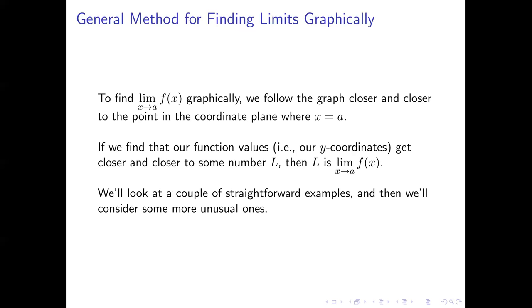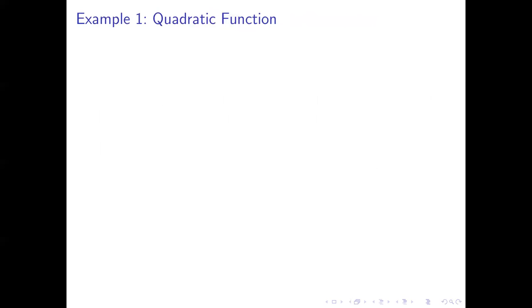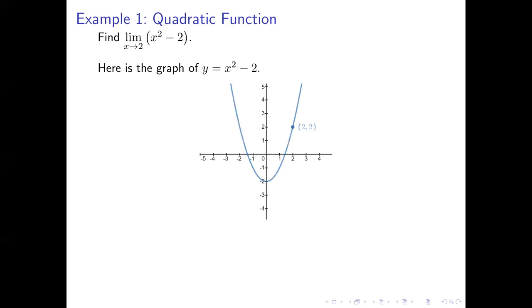The easiest way to see how to do this is with some examples. We'll start with some fairly straightforward ones and then turn to some that are a little more unusual. Here's our first example: it involves a very straightforward quadratic function. We're going to find the limit as x approaches 2 of x squared minus 2. To do this we're going to look at the graph of the function defined by x squared minus 2.